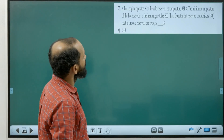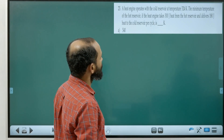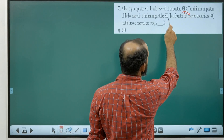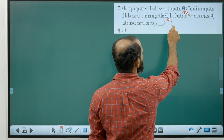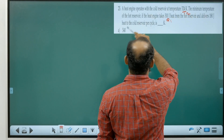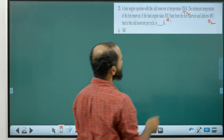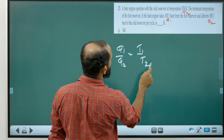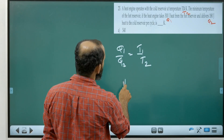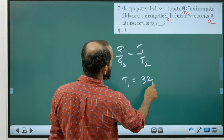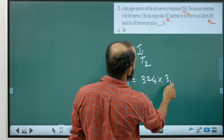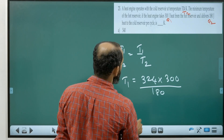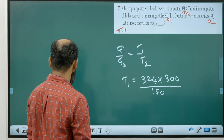Question 25: a heat engine operates with cold reservoir temperature T2 = 324 K. It absorbs Q1 = 300 J from the hot reservoir and rejects Q2 = 180 J to the cold reservoir. Using Q1/Q2 = T1/T2: T1 = T2 × Q1/Q2 = 324 × 300/180 = 540 K.